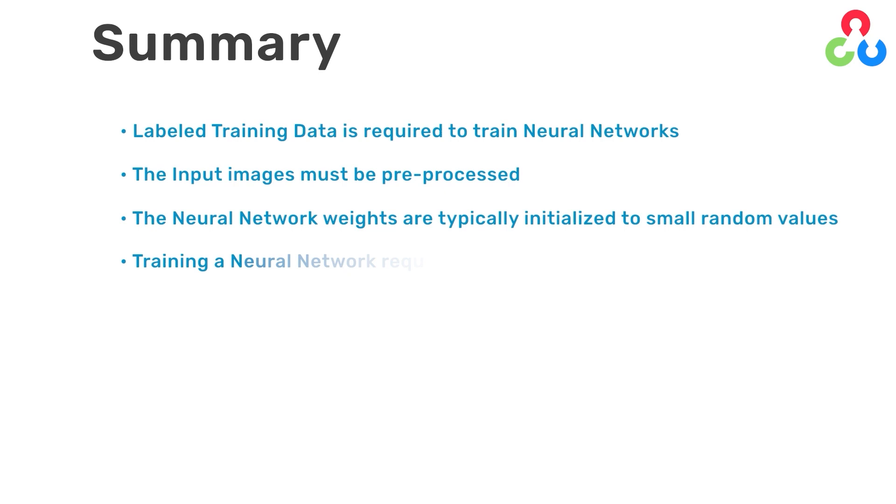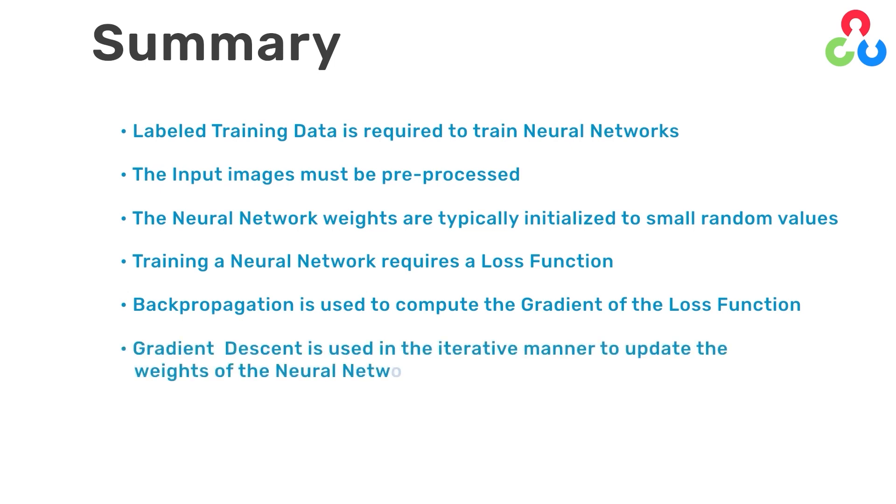The neural network weights are typically initialized to small random values. Training a neural network requires a loss function, which is used to quantify the error between the network output and the expected output. The gradient of the loss function is computed using an algorithm called backpropagation, which is built into deep learning frameworks like TensorFlow and PyTorch. And then gradient descent is the process that's used in an iterative manner to update the weights of the neural network. And then finally, training progresses until the loss function stabilizes and stops decreasing.